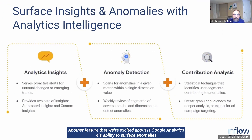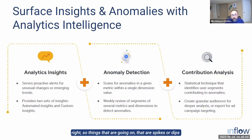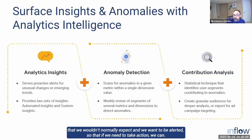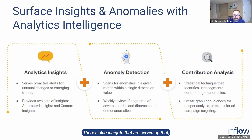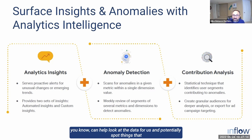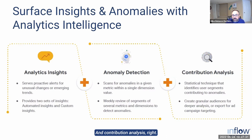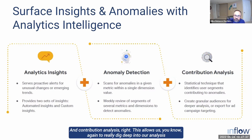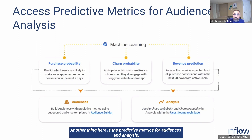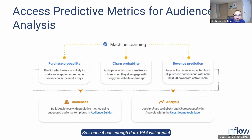Another feature we're excited about is GA4's ability to surface anomalies — spikes or dips we wouldn't normally expect — so we can be alerted and take action. There are also insights that can help spot patterns in the data, not necessarily anomalies, but interesting stats that can make us smarter about the campaigns we're running. Contribution analysis allows us to dig deep and see which channels are contributing, at what levels, and how that fits into the customer journey.